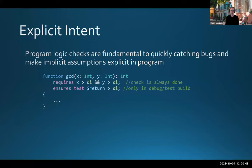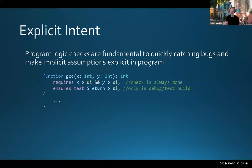We also want to make it easy for a developer to express not only source code but what that code should do — constraints on it. Here we have a GCD function with an explicit, standard way to put in a 'requires' clause: X should always be greater than zero, Y should always be greater than zero, and the return value should always be greater than zero. You might want to control these — some tests run all the time, some only in test mode, some only in debug.